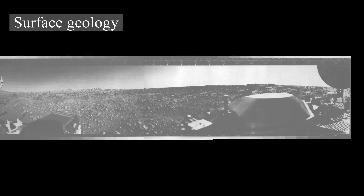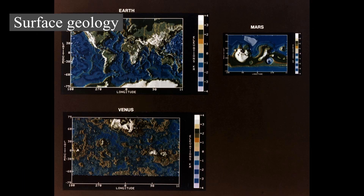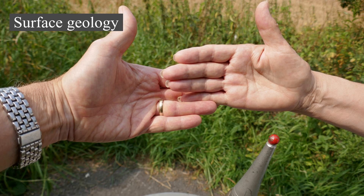The Hesperian Period, from 3.5 to between 3.3 and 2.9 billion years ago, is marked by the formation of extensive lava plains. The Amazonian Period, from between 3.3 and 2.9 billion years ago to the present, features regions with few meteorite impact craters but otherwise quite varied terrain. Olympus Mons formed during this period. Geological activity is still taking place on Mars: the Athabasca Valles is home to sheet-like lava flows created about 200 million years ago, and water flows in the Cerberus Fossae occurred less than 20 million years ago, indicating recent volcanic intrusions.